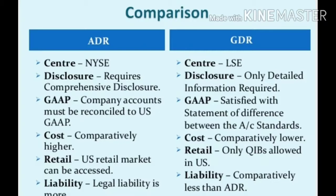Comparing ADR and GDR: Cost is comparatively higher in ADR, while cost is comparatively lower in GDR. Regarding retail access, the US retail market can be accessed through ADR, while only Qualified Institutional Buyers, or QIBs, are allowed in GDR in the US. Regarding legal liability, legal liability is more in ADR, whereas in GDR, liability is comparatively less than ADR.